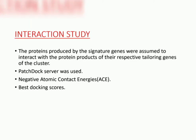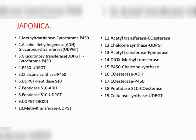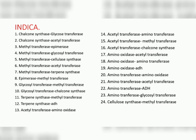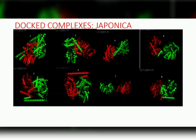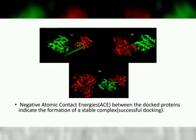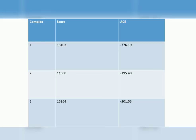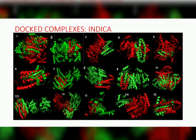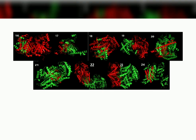The PatchDock Server was used to conduct the interaction study of the signature and tailoring gene products of both species of rice, and we focused on the negative atomic contact energies and the best possible docking scores. We could perform 19 protein-to-protein interactions from Japonica and 24 of the same from Indica. The proteins interacting well with each other are indicated by considerably negative atomic contact energies, meaning they are stable.